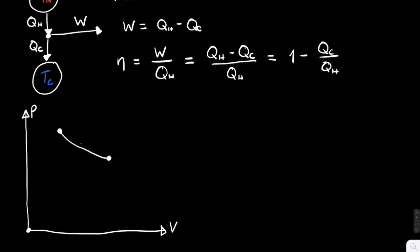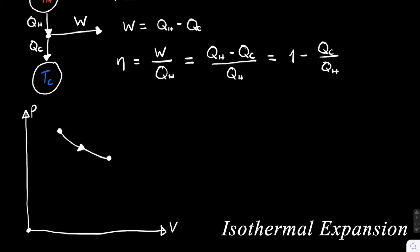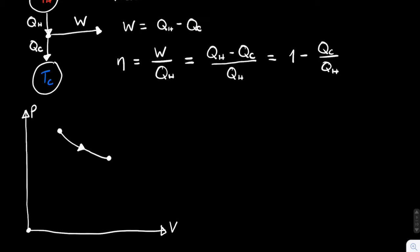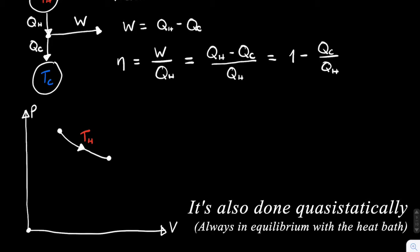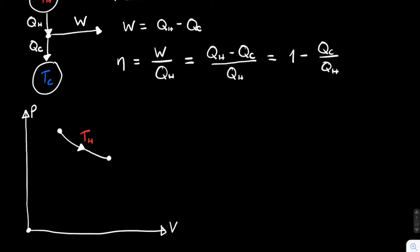We increase the volume isothermally — that's the key thing. We call this the hot temperature Th. So this first part of the process, going from point one to point two, is an isothermal expansion of the gas. Isothermal means it's happening at the same temperature, which physically means the gas is surrounded by a heat bath at constant temperature. That's stage one.